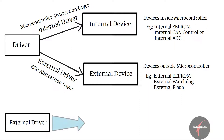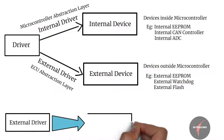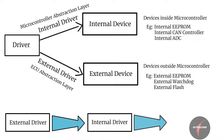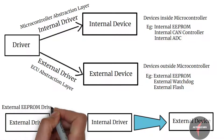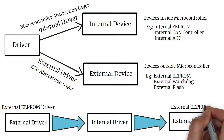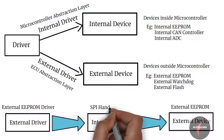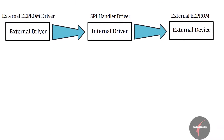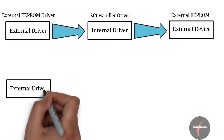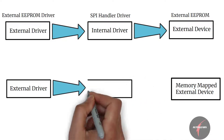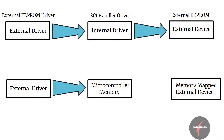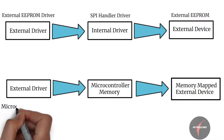External drivers in the ECU abstraction layer use internal drivers of the microcontroller abstraction layer to access the external device. For example, an external EEPROM driver shall access the external EEPROM through the SPI handler driver present in the microcontroller abstraction layer. There do exist exceptions for memory-mapped external devices, where the drivers access the microcontroller memory directly. In such cases, the external drivers are present in the microcontroller abstraction layer.